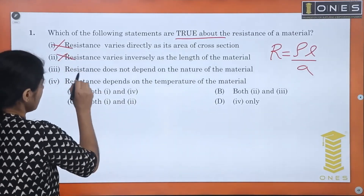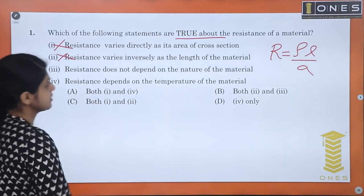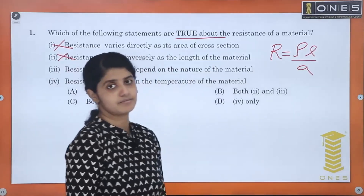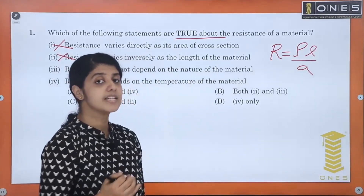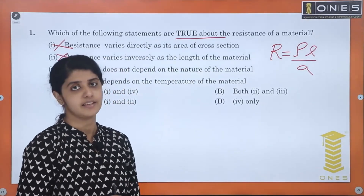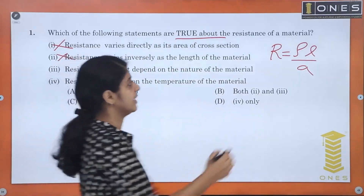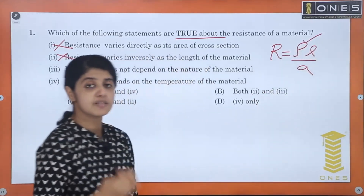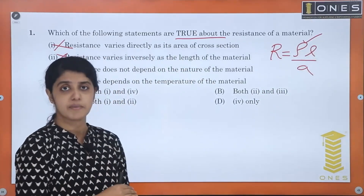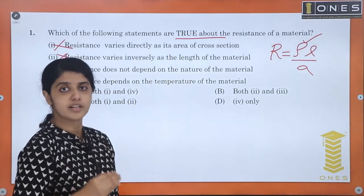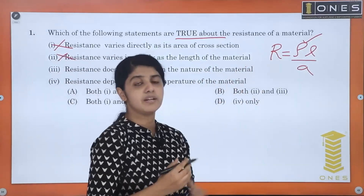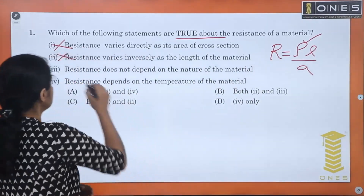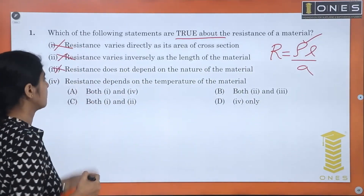The next statement: resistance does not depend on the nature of material. In fact, resistance does depend on the nature of material — we have resistivity, also called specific resistance, which accounts for this. So this option is also wrong.